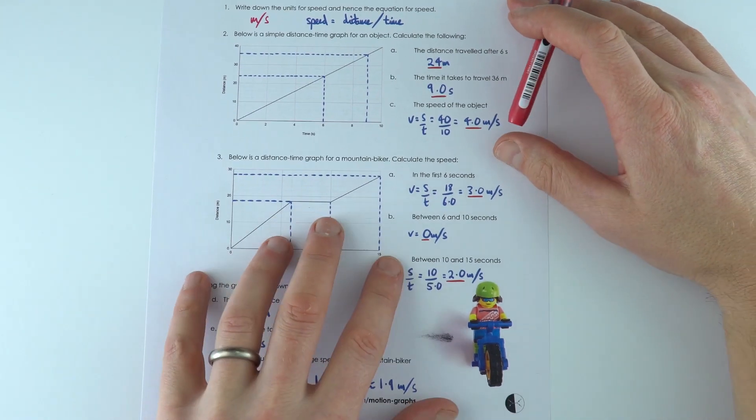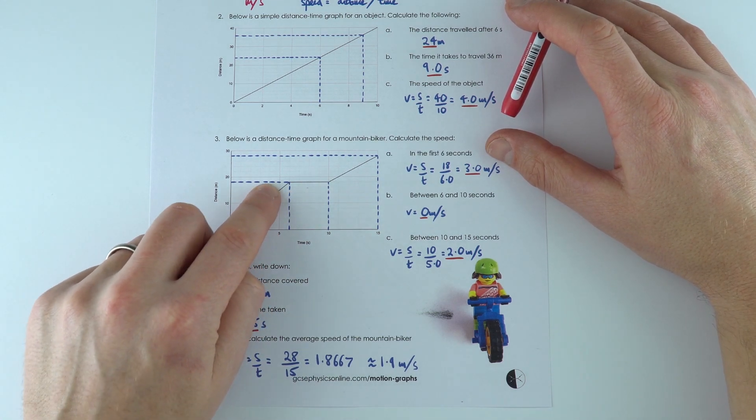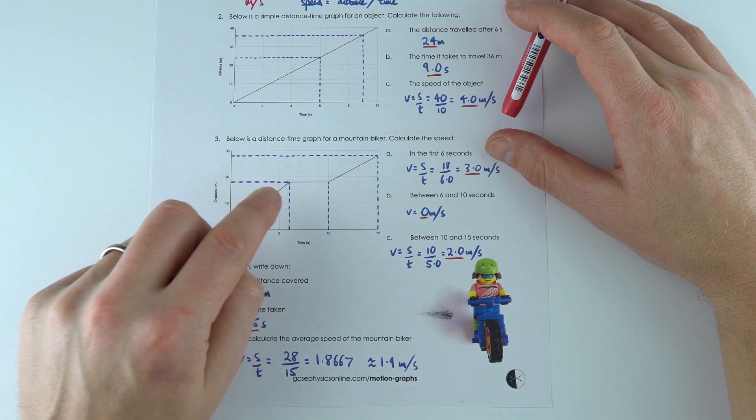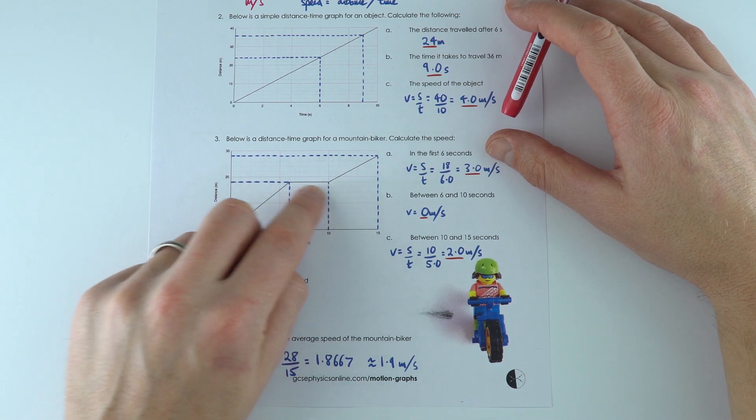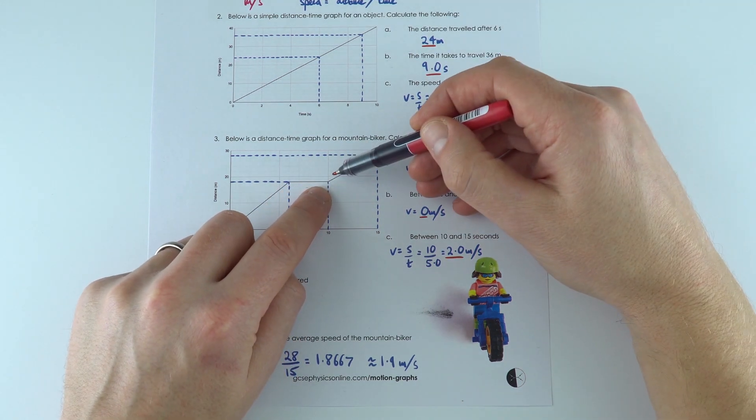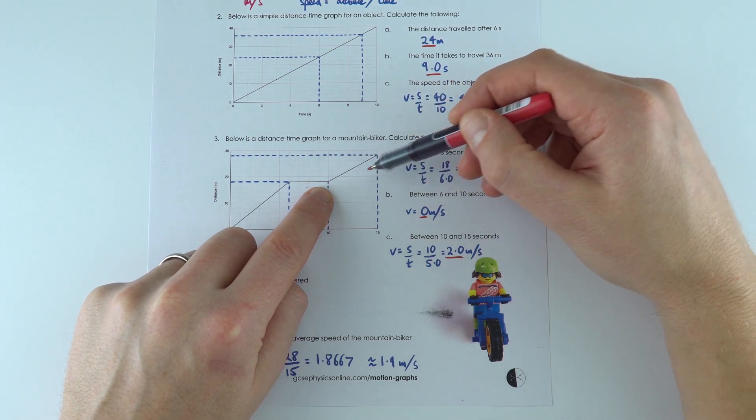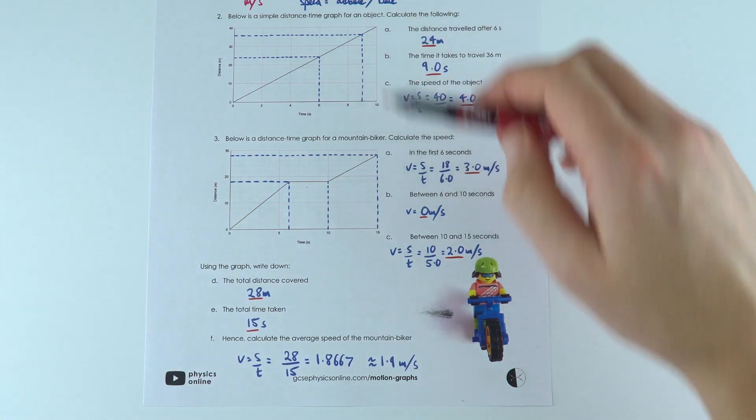We did something similar here to find that initially the speed was 3 meters per second. Between 6 and 10 they were stopped, so their velocity was zero or their speed was zero. Then between 10 and 15 we looked at how they went an extra distance of 10 meters in a time of 5 seconds, so 2 meters per second.